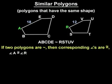So in the diagram shown, angle A is congruent to angle R, and angle B is congruent to angle S, and angle C is congruent to angle T, and so on.